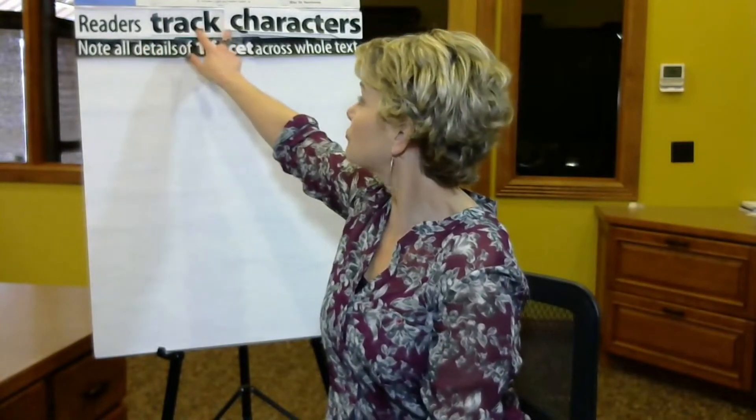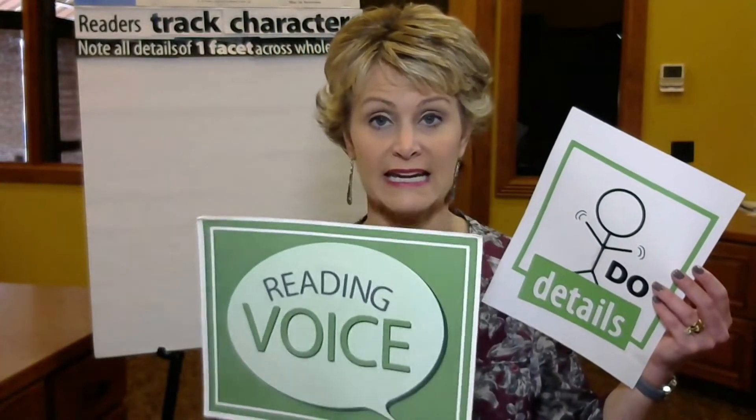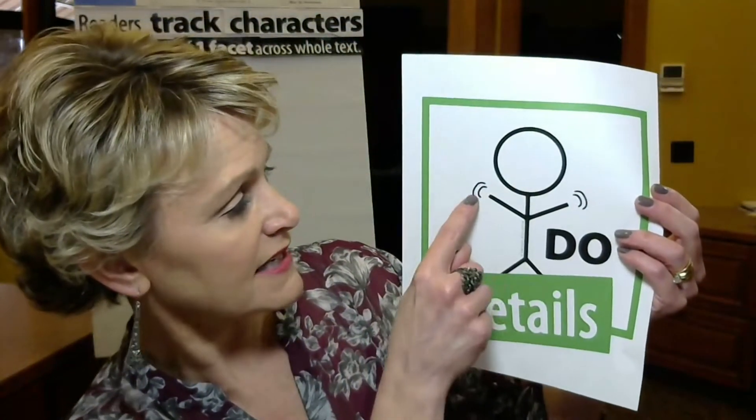So what do you take notes on? What do you look for in a character — what details will help you track and figure out how the author developed them? The first kind of detail you want to look for is what a character does. These details come through your reading voice — it will read things about the character that the character does. Actions. So let's look at the stick figure here with the shaky arms, because it's action — things he does.